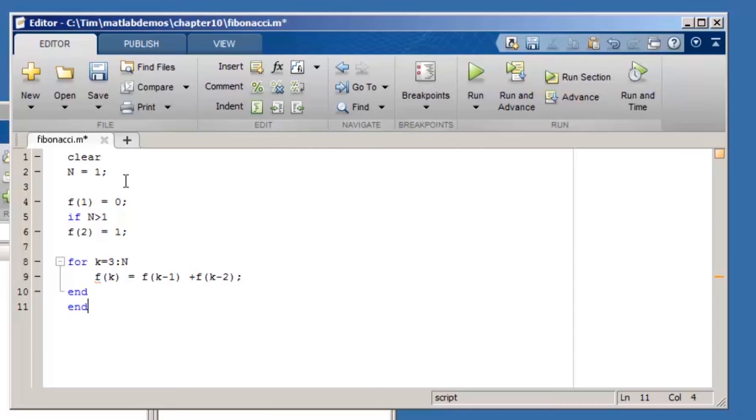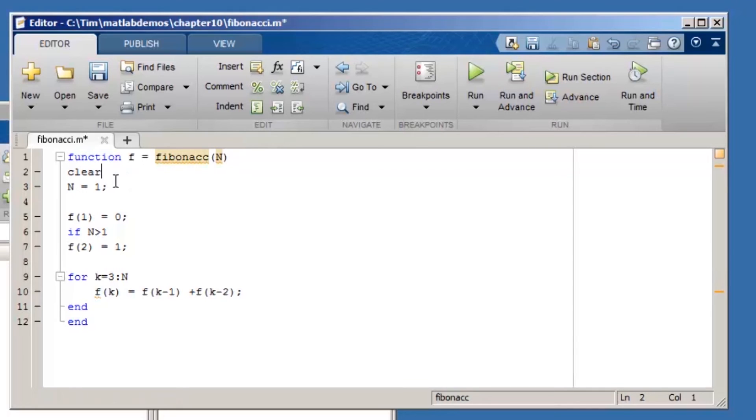Finally, it's irritating to edit the file every time I want to recalculate the series, so I'll convert it to a function. My function declaration statement is function f equals Fibonacci of n. If I do that, I need to get rid of the assignment of n within the file so that I don't overwrite the value that's sent to the function. I also don't need to clear the value of f anymore. Since the function has its own workspace, that value will be cleared once the function finishes execution.